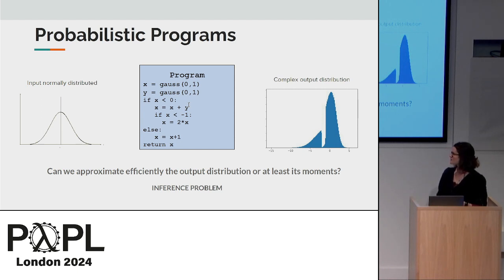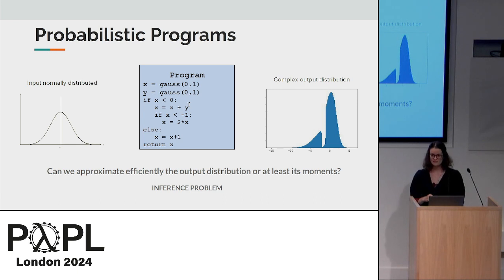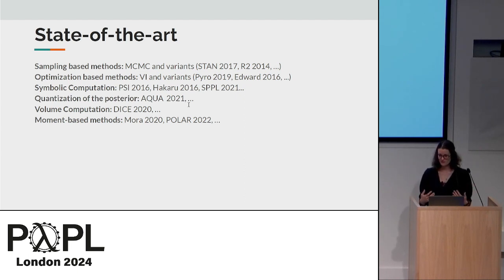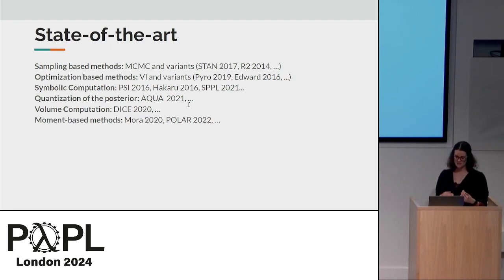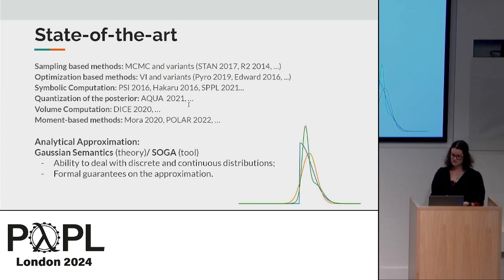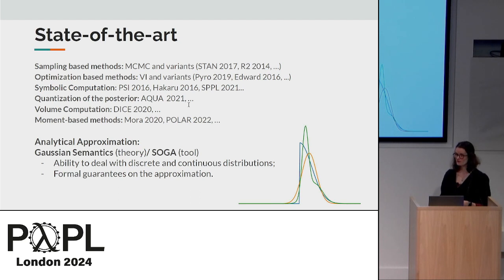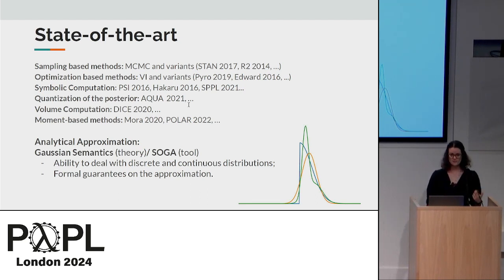We asked ourselves whether we could approximate efficiently the output distribution, or at least some moments. This is a very well-known problem called the inference problem, and there's a whole bunch of literature developing efficient methods for it. Each of these methods is tailored to some kinds of distributions and programs; some are exact, some approximate. Our contribution is to introduce a new method based on an analytical approximation, for which we provide a theoretical framework called Gaussian semantics, and also a practical implementation in a prototype tool called SOGA — second-order Gaussian approximator. The two distinguishing features are the ability to deal with both discrete and continuous distributions, and that the theoretical framework provides formal guarantees on the approximation.